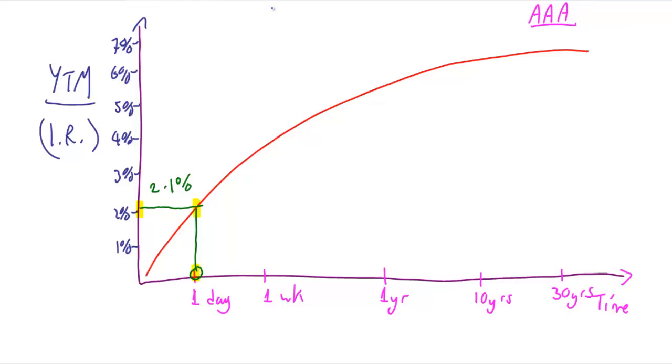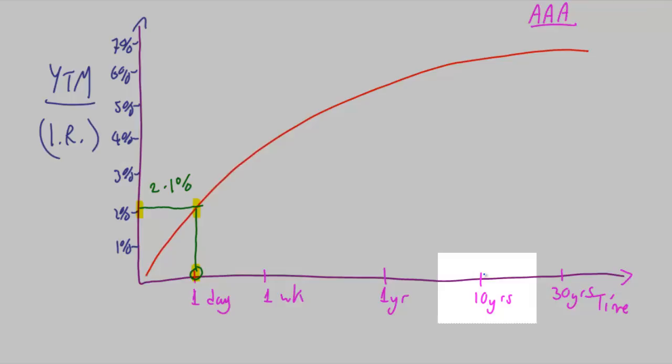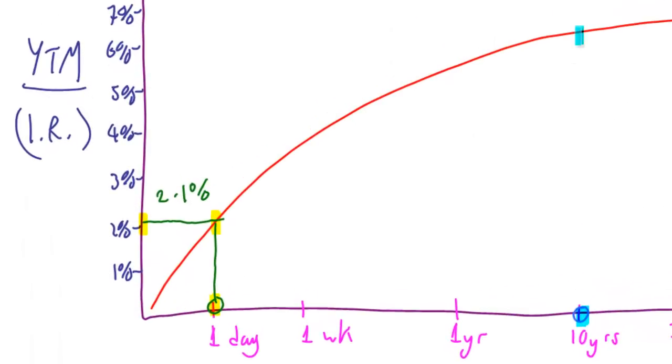Now, what this curve also means is that if you borrow from me for, say, 10 years, say there, then, again, we go up to the yield curve, and then we go across to about there. So, let's just put the lines in for that, so we can see where we're going.